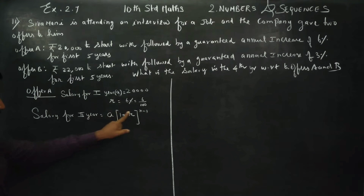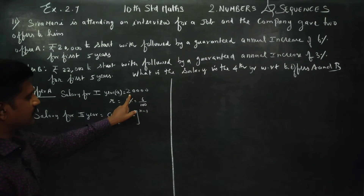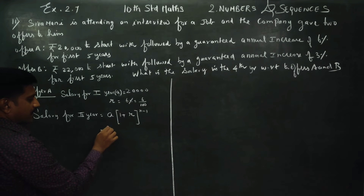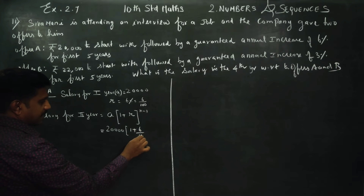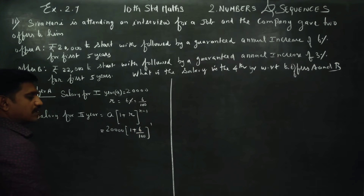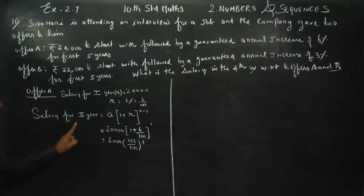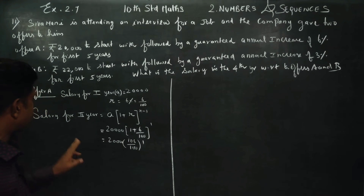Using the formula, salary for the second year is a into (1 + R)^(n−1). So it is 20,000 into (1 + 6/100)^(2−1), which gives 20,000 into (106/100)^1. So the salary for the second year is 20,000 into 106 by 100, whole power 1.